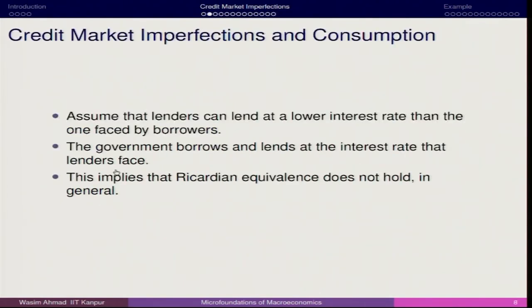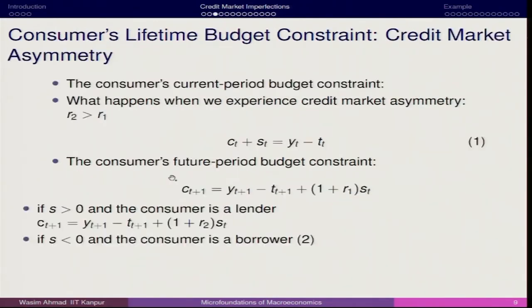Let us start. Normally in the credit market, when borrowing and lending rates differ, we examine how the consumer's behavior changes depending on whether it is acting as a lender or a borrower. Credit market asymmetry implies that if R2 is the borrowing rate and R1 is the lending rate, and R2 is greater than R1, then if you are going to borrow you are supposed to pay a higher interest rate compared to when you lend the money.